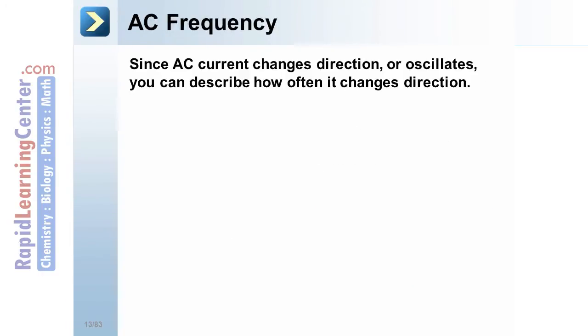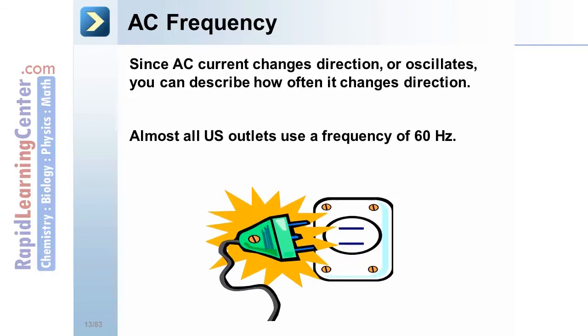AC frequency. Since AC current changes direction, or oscillates, you can describe how often it changes that direction. In the U.S., all outlets use a frequency of 60 Hz. This means the electrons change direction, move back and forth, 60 times every single second.